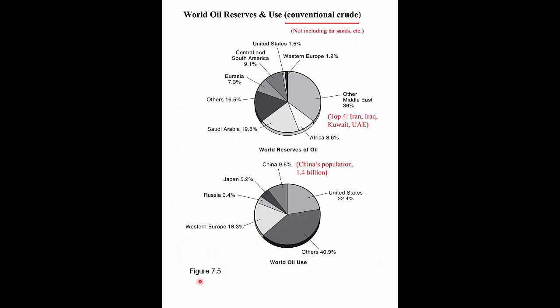This is figure 7.5 from your textbook. This pie chart shows the World Oil Reserves by country, and this pie chart shows oil use by country. It covers only conventional oil — it doesn't include things like tar sands or oil from shale or fracking.